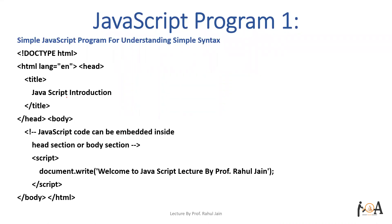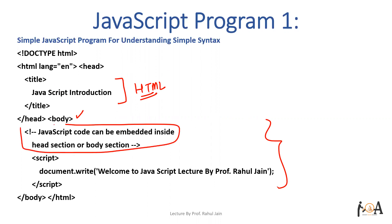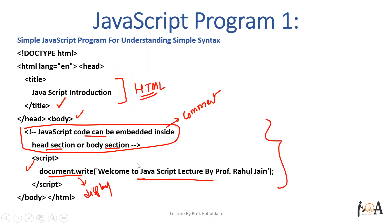I am also going to execute it and give you a line-by-line explanation of this code. The title tag shows text on the top title bar for the page. Inside the body, this portion is a comment — it is not going to be read by the compiler, it is only for the understanding of developers. JavaScript code can be embedded inside the head section or body section. The script tag is used, and document.write is going to display this content on the browser.